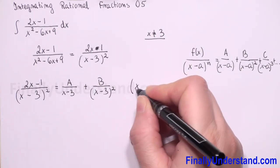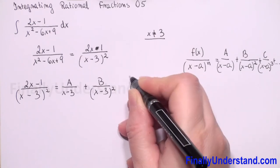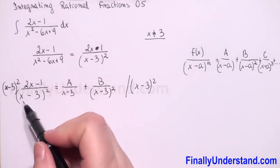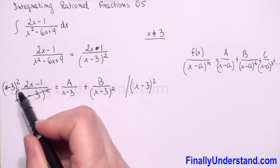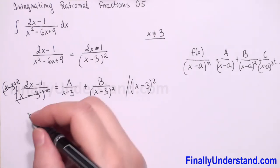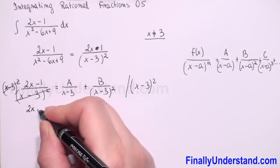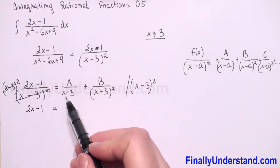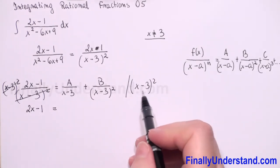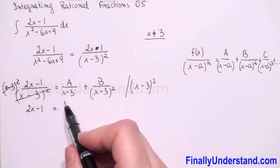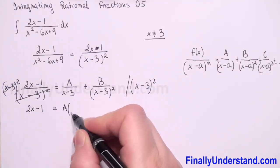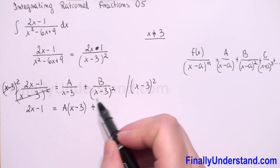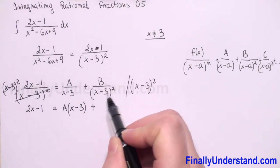We multiply both sides by (x minus 3) squared. On the left side we reduce and get 2x minus 1. On the right side, multiplying A over (x minus 3) by (x minus 3) squared reduces one factor, giving A times (x minus 3). The second term's denominator fully cancels, leaving only B. So we have: 2x minus 1 equals A times (x minus 3) plus B.